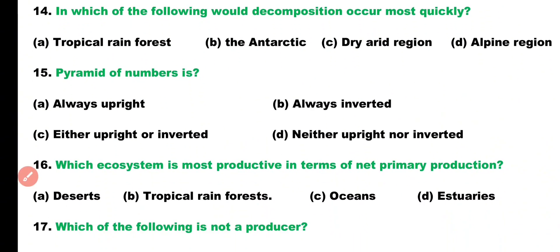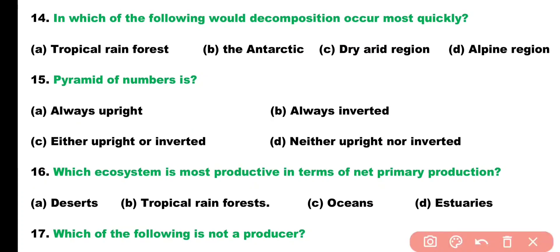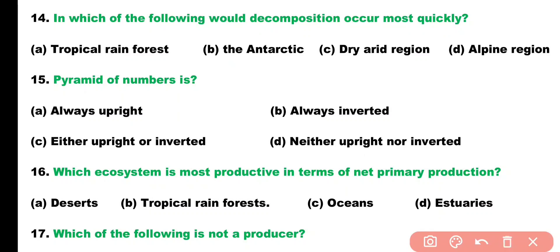Question number fourteen. In which of the following would decomposition occur most quickly? Options: tropical rainforests, Antarctic region, dry-arid region, or alpine region? Correct answer is option A. Tropical rainforests have the highest rate of decomposition.